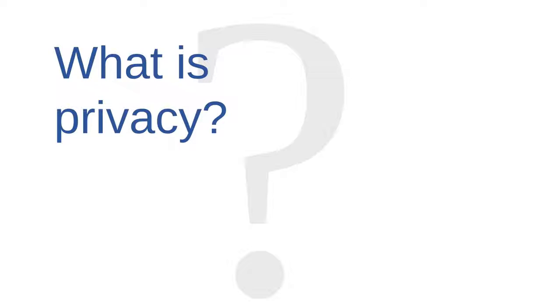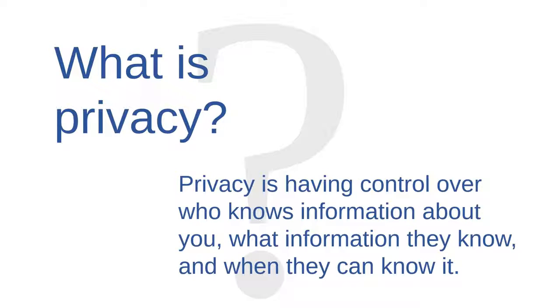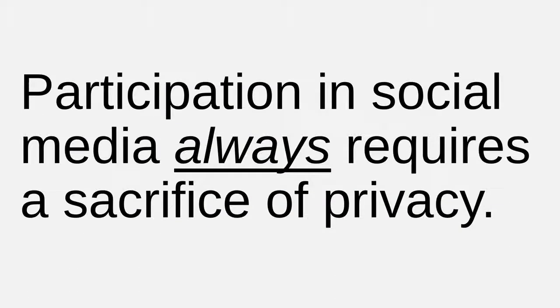There are a lot of different ways that you could define privacy. One helpful definition might look like this: privacy is having control over who knows information about you, what information they know, and when they can know it. If you have a good deal of control over who knows what about you and when they know it, then most people would probably agree that you enjoy a high degree of privacy.